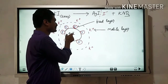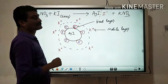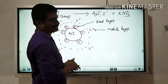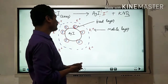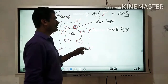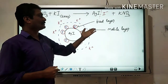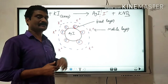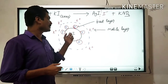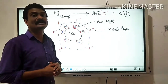The AgI particles adsorb I⁻ ions from the solution when excess KI solution is added, and the AgI particle becomes negatively charged. The counter ion K⁺ remains in the solution, and the dispersion medium acquires an equal but opposite charge to that of the colloidal particle. So here, colloidal particles acquire negative charge and the dispersion medium acquires positive charge.